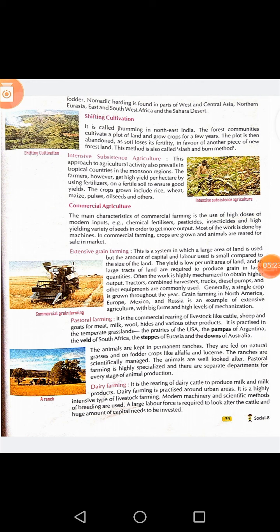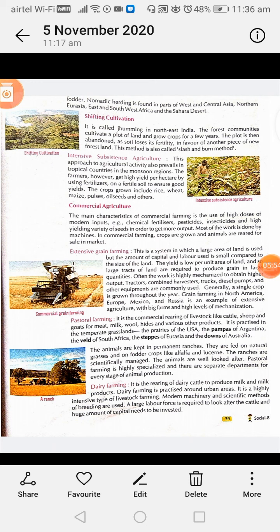Commercial agriculture: the main characteristic of commercial farming is the use of high doses of modern inputs, for example chemical fertilizers, pesticides, insecticides and high yielding variety of seeds, in order to get more output. Most of the work is done by machines. In commercial farming, crops are grown and animals are reared for sale in the market.